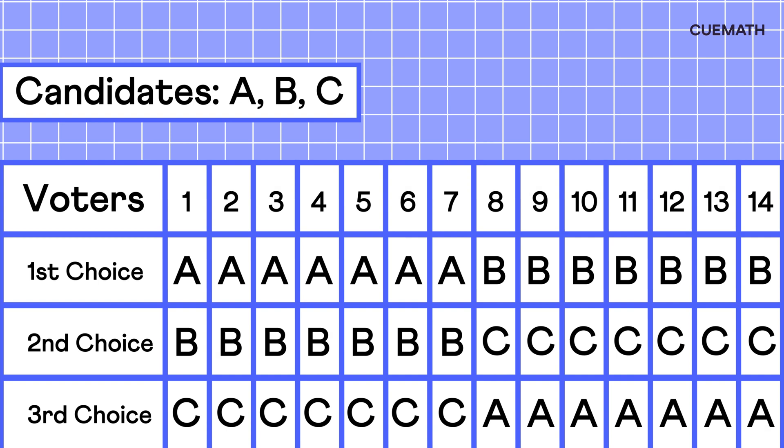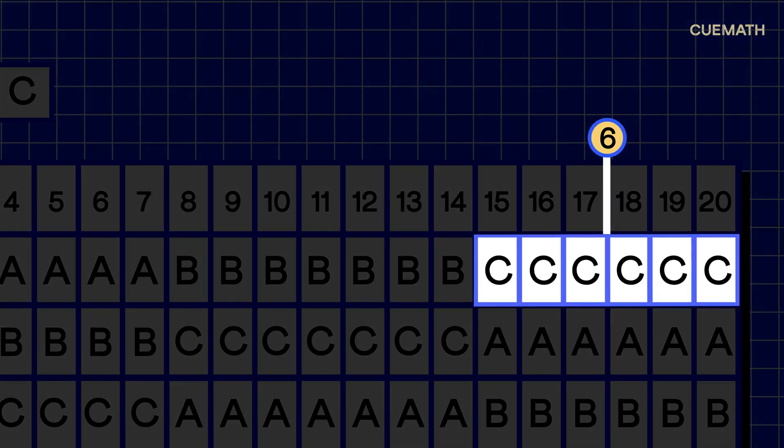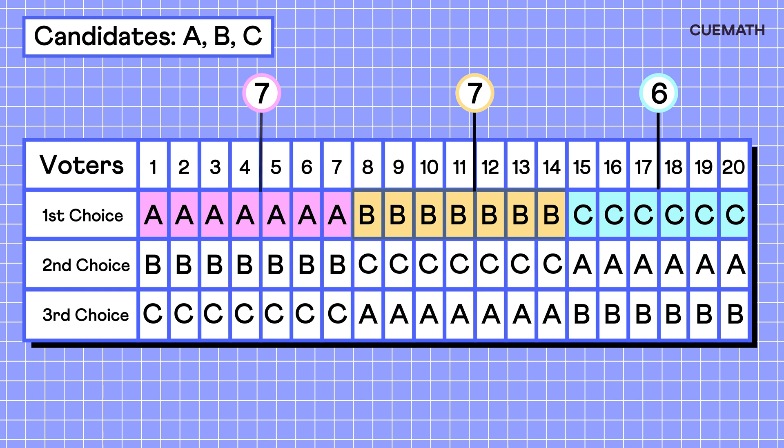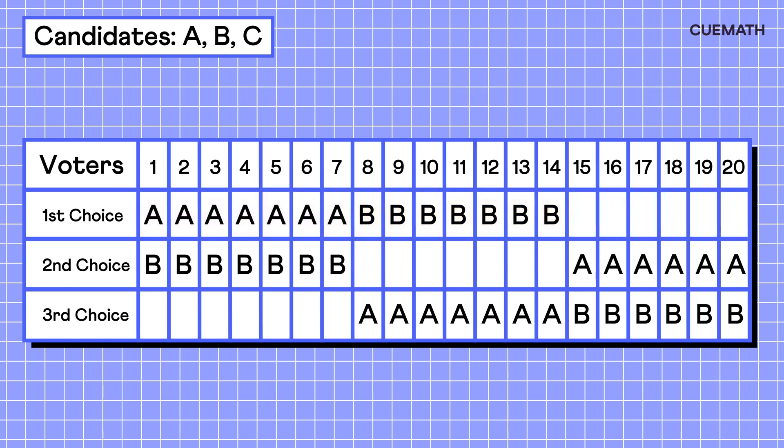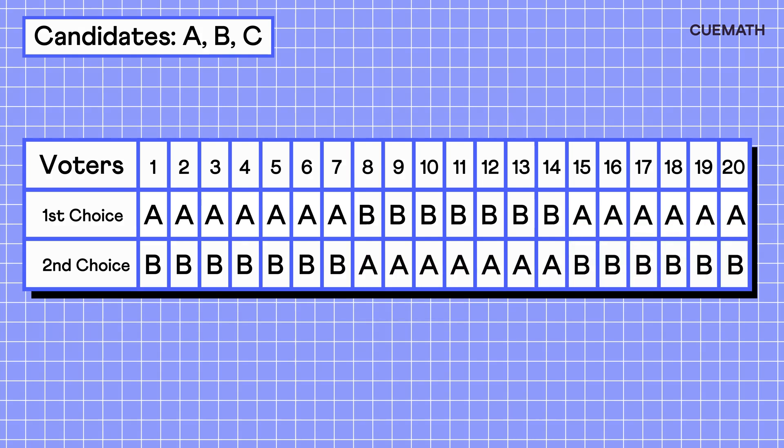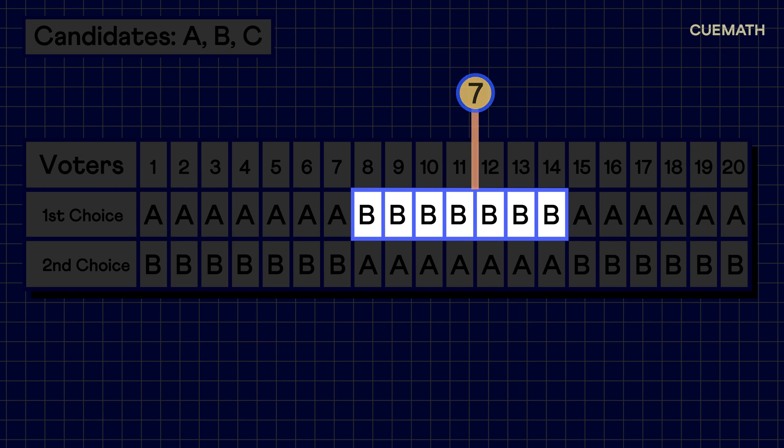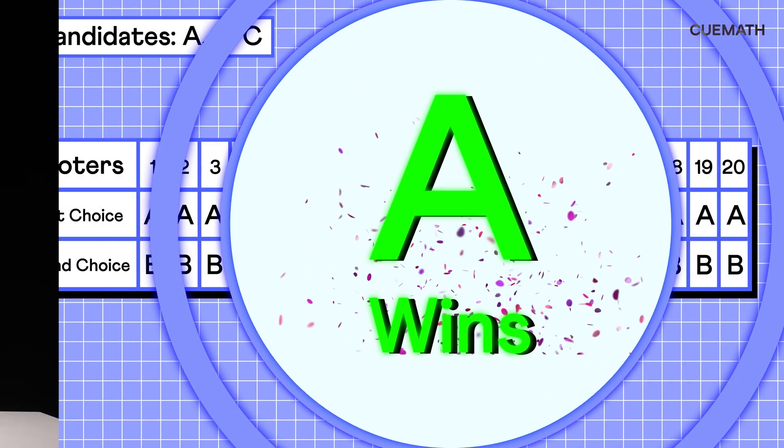Here, A and B have 7 first choice votes, and C has 6. With no clear majority, C with the fewest first choice votes is eliminated. C's votes are then reallocated based on the voters' next choices. After reallocation, A becomes the top choice for 13 voters, while B still for 7. So, A wins reflecting the majority's preference once the least popular candidate is removed.